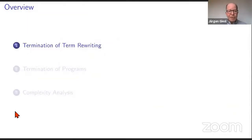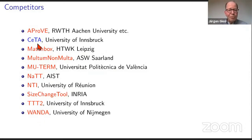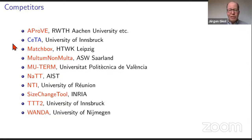The competition has several categories grouped into three groups: termination of term rewriting and variants, termination of programs, and complexity analysis. For termination of term rewriting, I put the tool names in red, except for CETA, which is in blue, because CETA is not a termination prover but a certifier. The idea is that you shouldn't trust the termination provers too much, so it's good to check their proofs and make sure they are sound. CETA is based on Isabelle and therefore has a high level of trust when checking these machine-generated proofs.